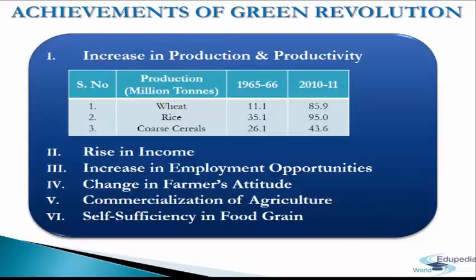The next achievement is the rise in income. Although the Green Revolution was limited to crops of wheat and rice and four regions — the northern states of Punjab, Haryana, western Uttar Pradesh, and later Andhra Pradesh — its benefits were enjoyed by farmers of those states. The Green Revolution also played a critical role in alleviating rural poverty in these states. The next achievement is an increase in employment opportunities.